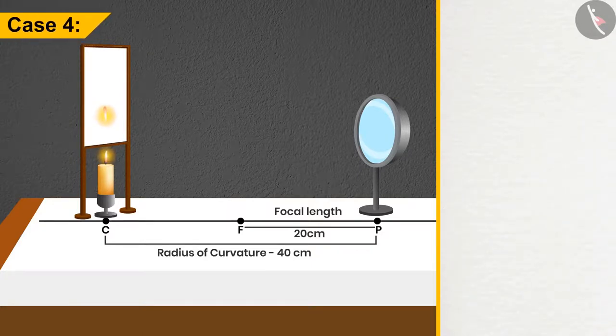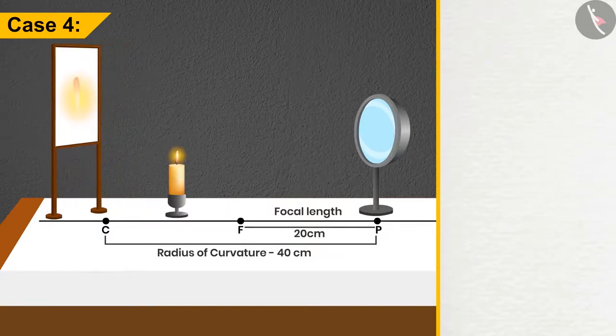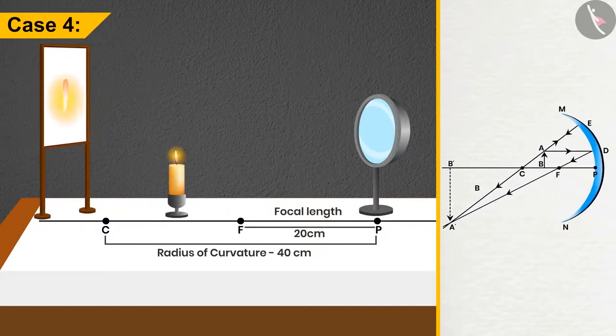Case 4: If the candle is placed between C and F, then we will get the image beyond C. The size of the image is enlarged and nature is real and inverted.